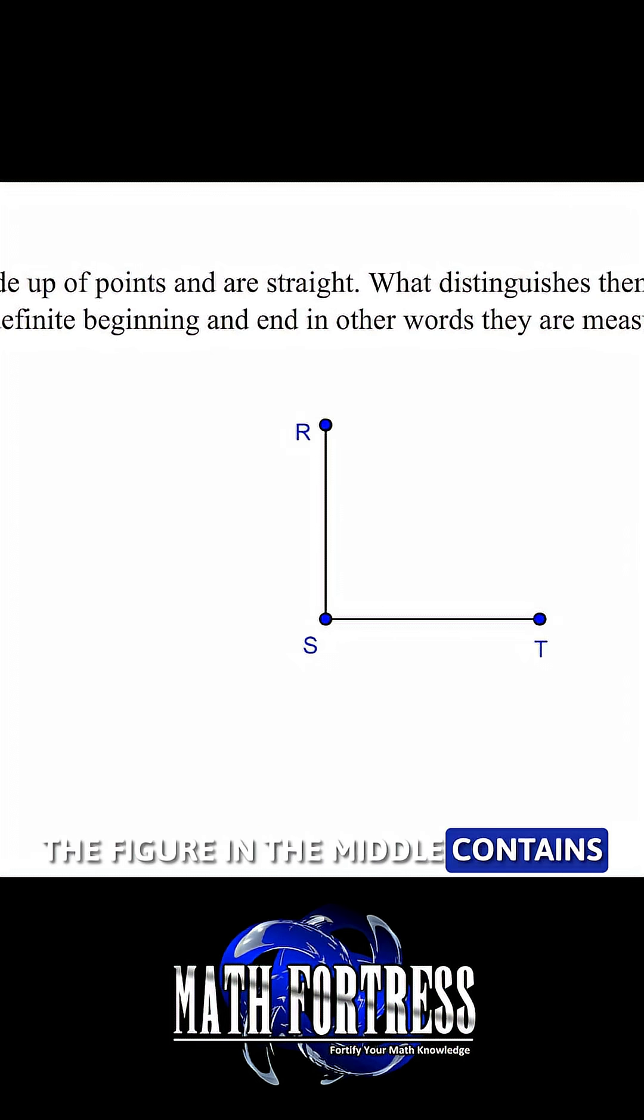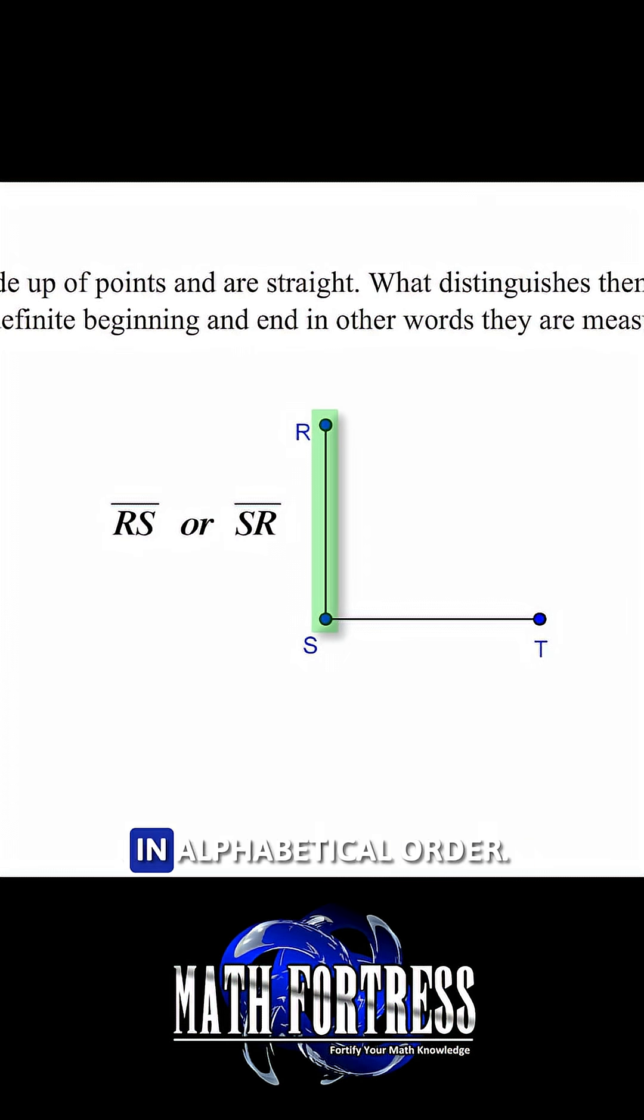The figure in the middle contains two line segments. The vertical up and down segment can be called RS or segment SR. Once again, we usually denote them in alphabetical order.